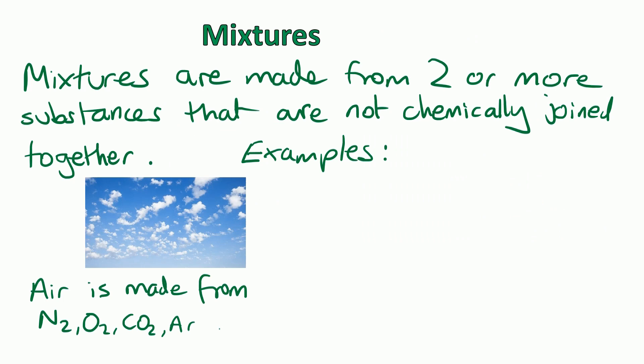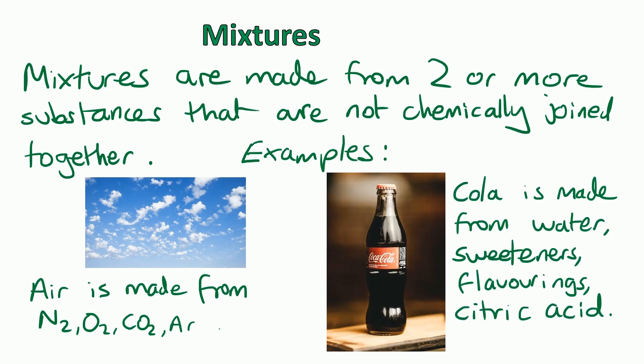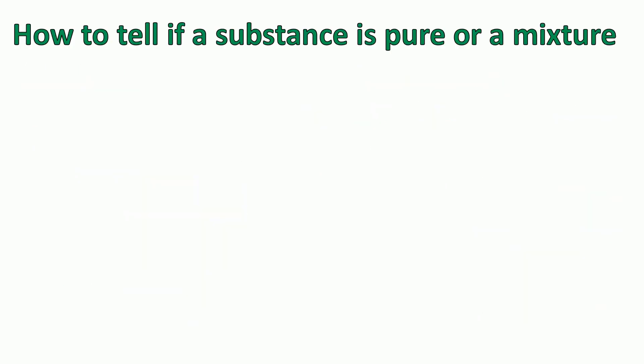Mixtures are made from two or more substances that are not chemically joined together. An example would be air, which is made from different gases like nitrogen, oxygen, carbon dioxide, and a little bit of argon — they're not joined together. Another example would be cola, which is made from water, sweeteners, flavorings, and citric acid, so it's made from several things that aren't joined together.